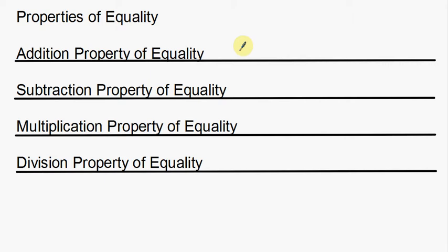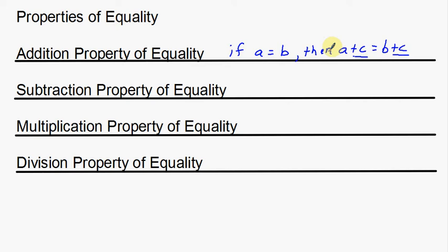I'm going to use a conditional statement to say this. A conditional statement is an if-then statement. If A is equal to B, then A plus C is equal to B plus C. This addition property of equality means that if I have an equivalent statement with an equal sign, if I add something to one side of the statement, then I have to add that same thing to the other side. Notice the plus C on both sides — if I add something to one side, I must add it to the other.